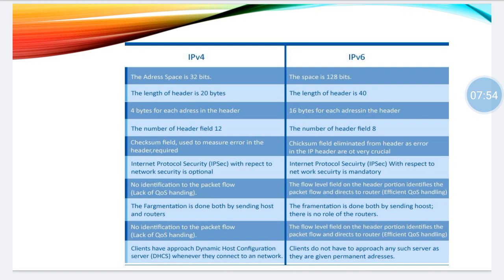Fragmentation is done by both host and routers in IPv4, but in IPv6 it is done only by the sender and not by the router — please remember this point. Finally, DHCP — Dynamic Host Configuration Server — is required in IPv4, but in IPv6 clients do not have to approach any sort of dynamic host configuration server.